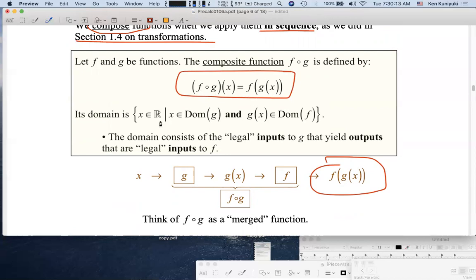Now the domain is a bit freaky looking, but don't worry, I won't be pushing you too hard on this. What are the legal values of x that will get us a real output? The set of all x in the reals such that x is in the domain of g, so it's a legal input to g, it's a legal input to the first button, and the resulting output g(x) is a legal input for the f button. So the domain consists of legal inputs to g that yield outputs that are legal inputs to f.